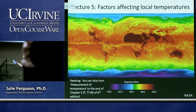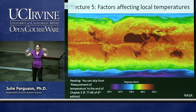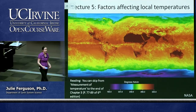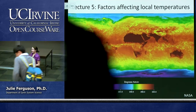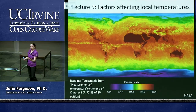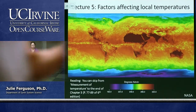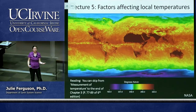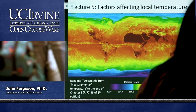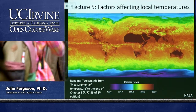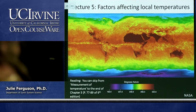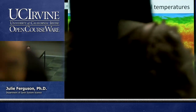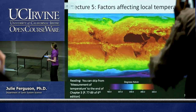Today we are going to talk about more local scale factors. So far we've been focusing on really big picture, global scale factors that affect our global temperature and climate. But now we're going to start narrowing that down. We're going to talk about weather — remember there were five things that define weather, and temperature is one of those. We'll look at a number of factors that affect temperature.